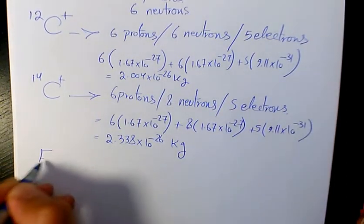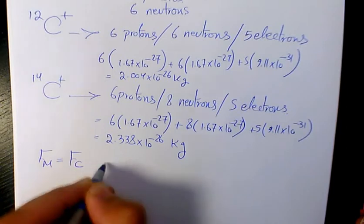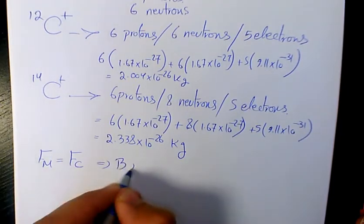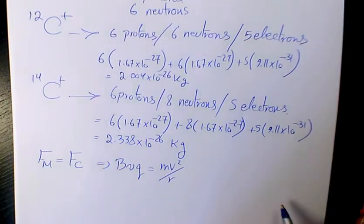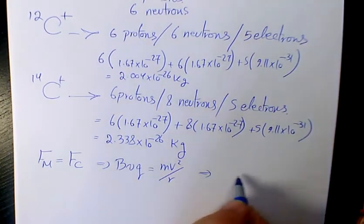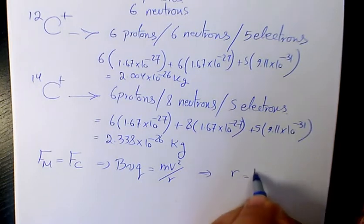Due to the relationship between magnetic force and centripetal force, BvQ = mv²/r. Rearranging this equation gives r = mv/qB.